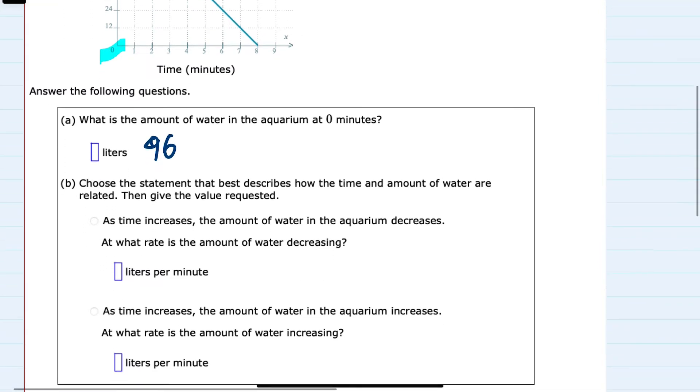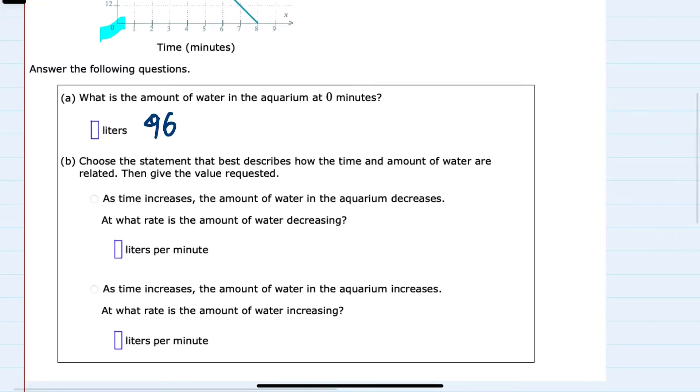The second part of this question asks us to choose the statement that best describes how the time and amount of water are related. One says that as time increases, the amount of water decreases. The other says that as time increases, the amount of water increases.